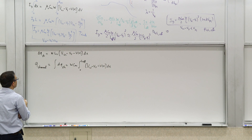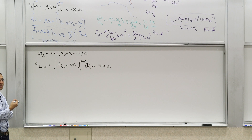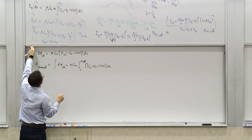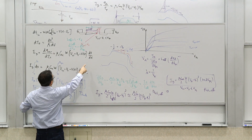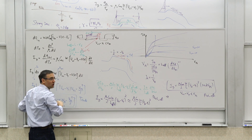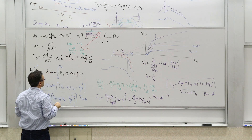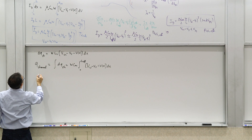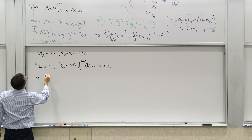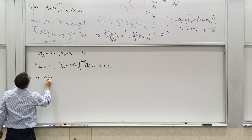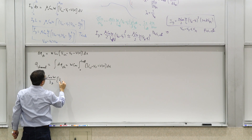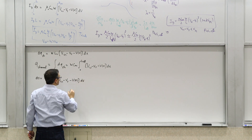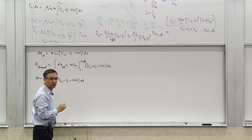It's easier to perform this integral over voltage rather than length. We have a relationship between voltage and dx and dv, so we can solve for dx in terms of dv. Solving for dx gives: dx = [μn·Cox·W / Id] · (Vgs − Vt − V(x)) dv. Plugging this back into the integral gives us Q_channel in terms of voltage.